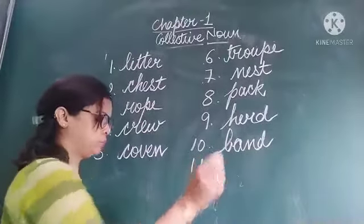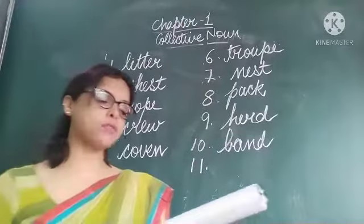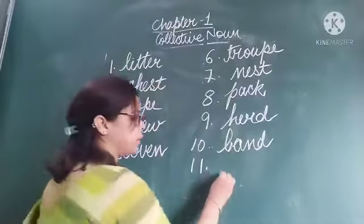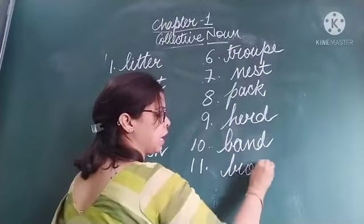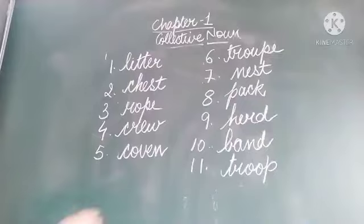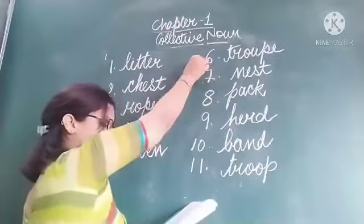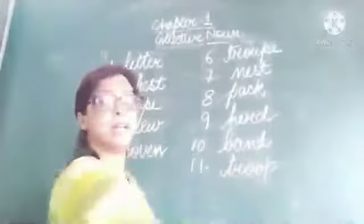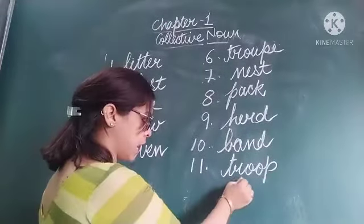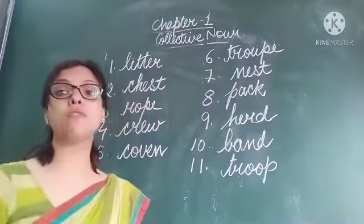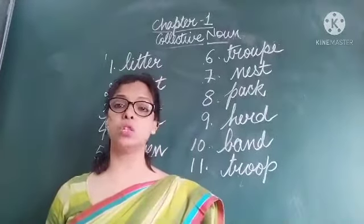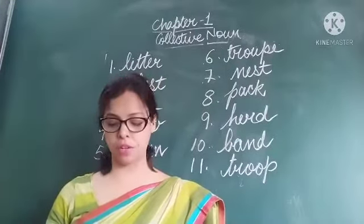Eleventh: the troop of soldiers crossed the bridge at night — spelled T-R-O-O-P. Note the difference: troupe of actors is T-R-O-U-P-E, while troop of soldiers is T-R-O-O-P. Pronunciation is the same but spelling is different.